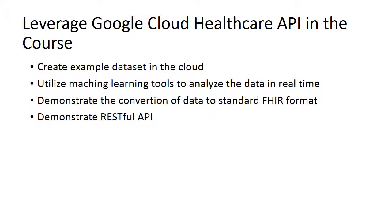Now let's look at how to leverage the Google Cloud Healthcare API in this course. First, we can create example datasets in the cloud and they will be automatically converted to FHIR format. We can also utilize machine learning tools to analyze the data in real time — that's a major function of the cloud. Additionally, we can demonstrate the conversion of data to standard FHIR format, which will help students understand how the FHIR standard works. The service hosted on the cloud will expose REST API endpoints so students can practice how to retrieve FHIR resources.